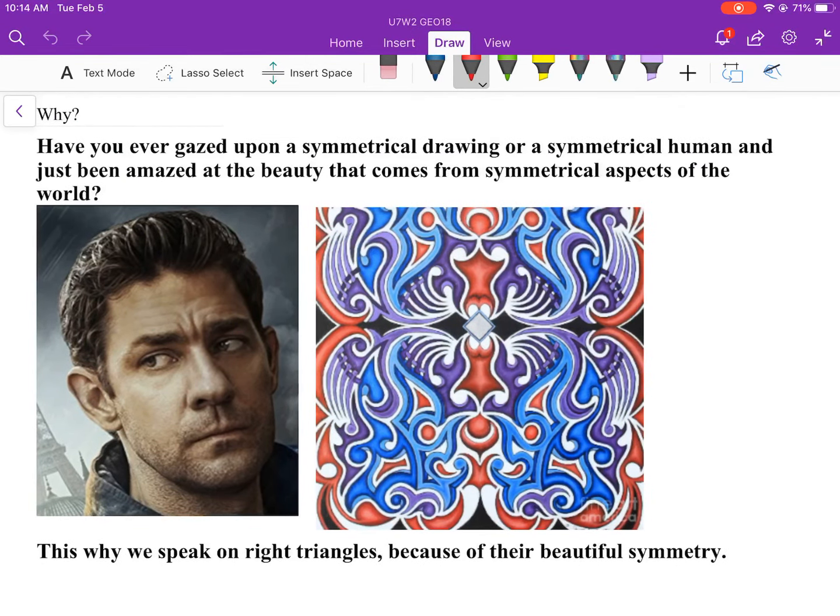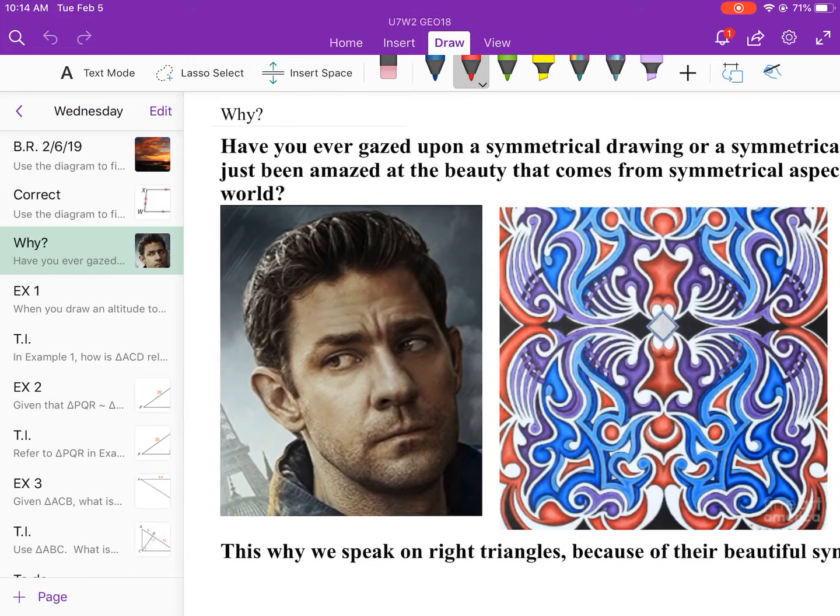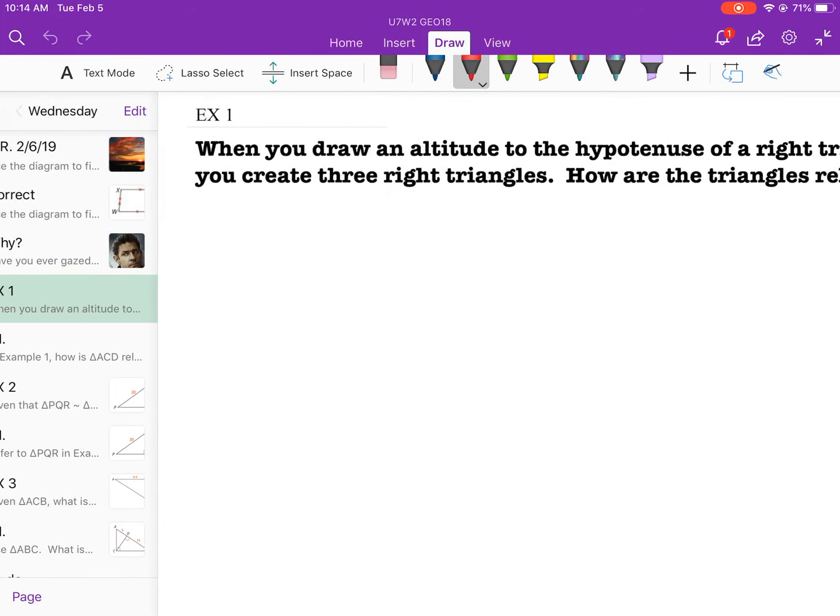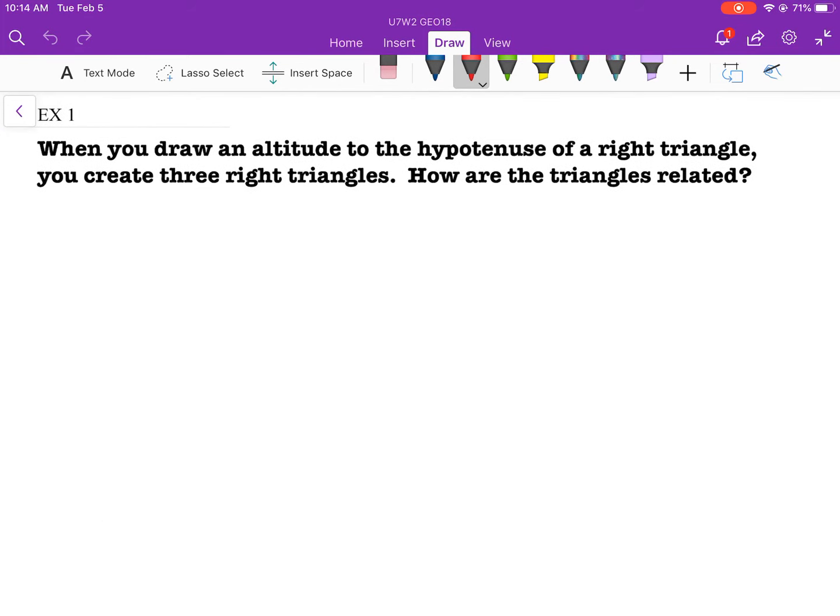Go ahead and read over that. It's got my boy Jack Reacher on it. Example 1: When you draw an altitude to the hypotenuse of a right triangle, you create three right triangles. How are the triangles related? That's a great question. You got the description, no picture. This is your prior knowledge. Draw a picture.